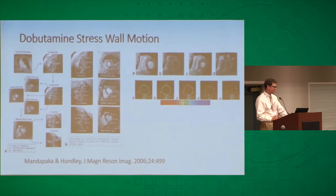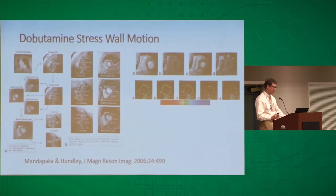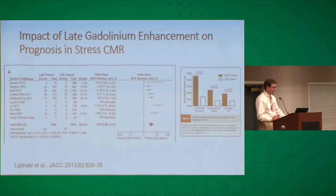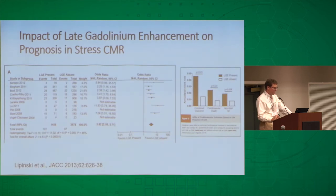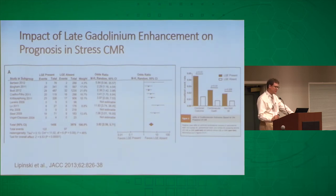There are also ways of assessing ischemic cardiomyopathy using dobutamine wall motion, similar to dobutamine stress echo. You can do this with cardiac MRI tagging to assess regional wall motion including regional strains for additional quantification. There's also data that late gadolinium enhancement corresponds to prognosis. In a meta-analysis, ischemic patients with no late gadolinium enhancement had improved prognosis compared to patients with more enhancement — for combined major outcomes including death and MI, as well as each individually.